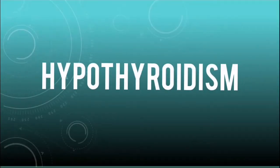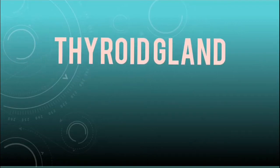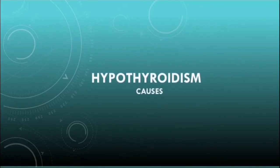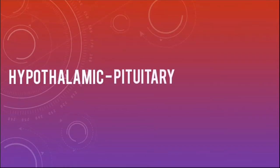Hypothyroidism is a condition caused by the thyroid gland not producing enough thyroid hormones such as T3 and T4. To understand the causes of hypothyroidism, it's important to first understand the hypothalamic-pituitary-thyroid axis.